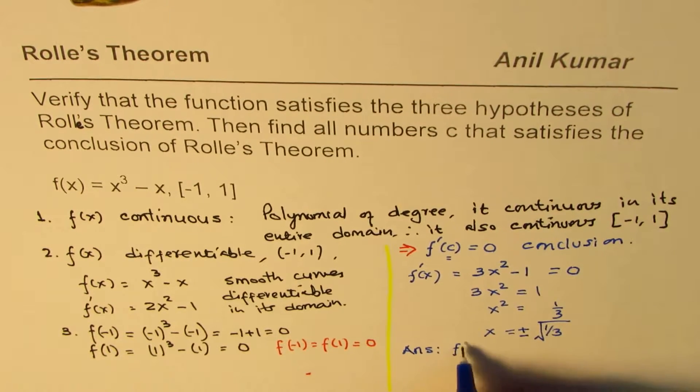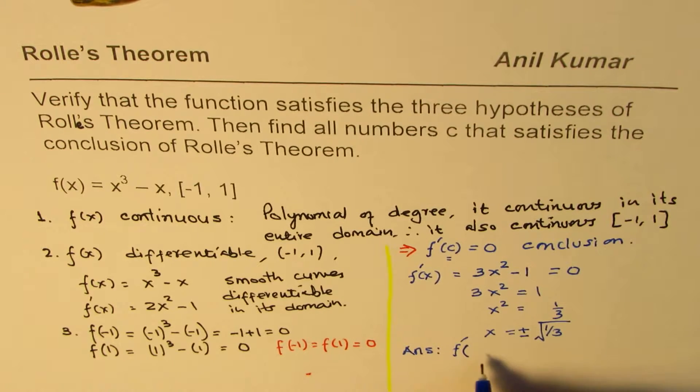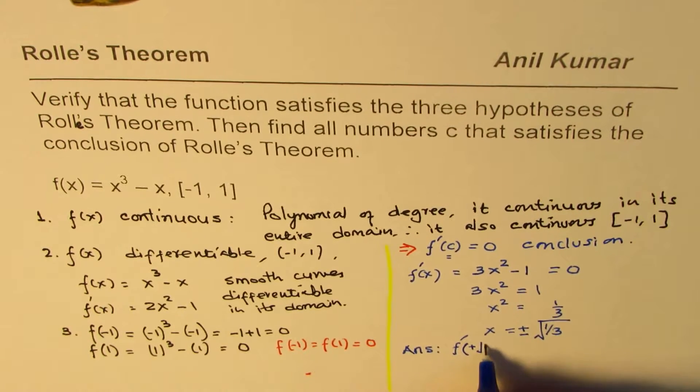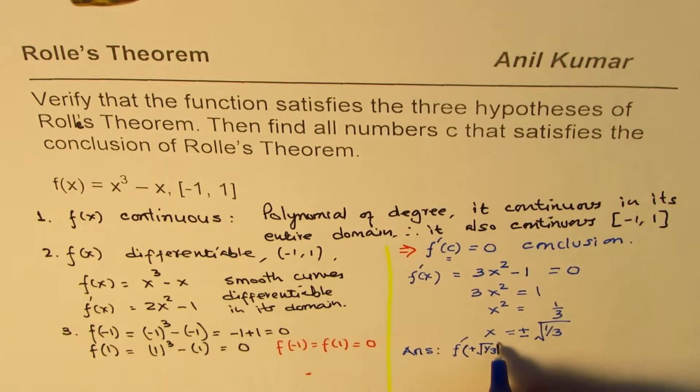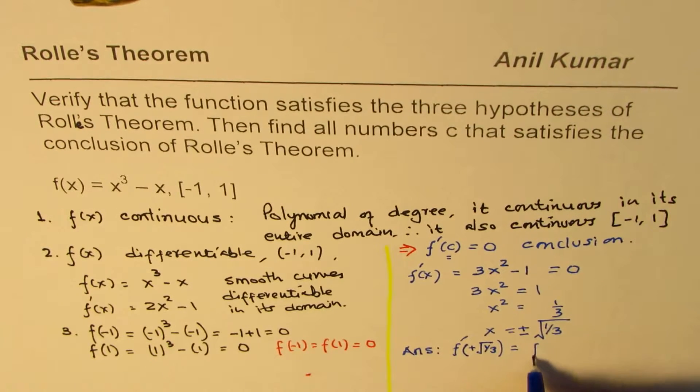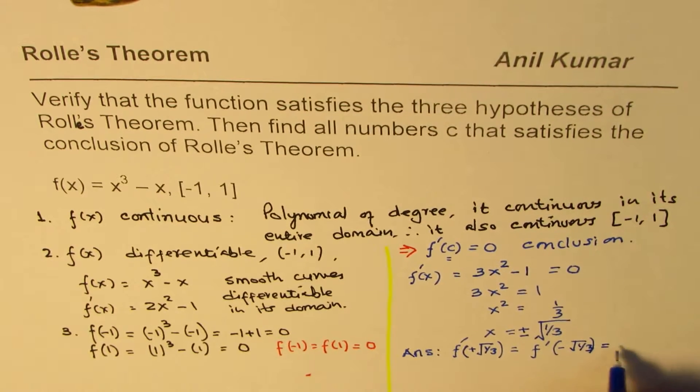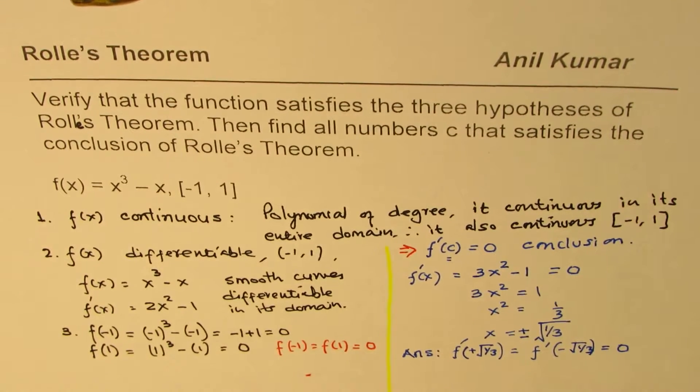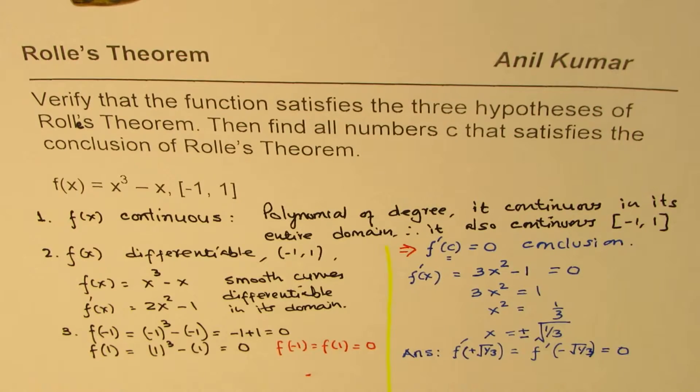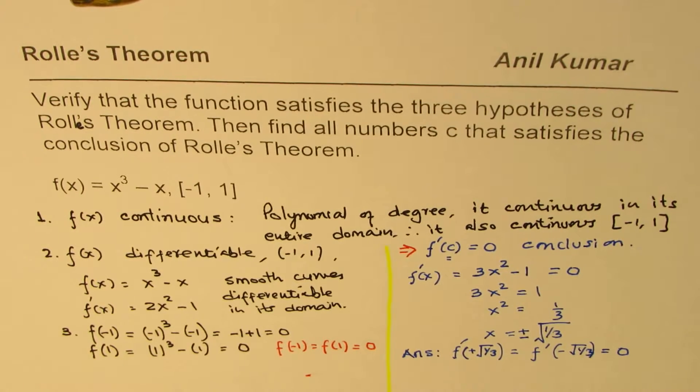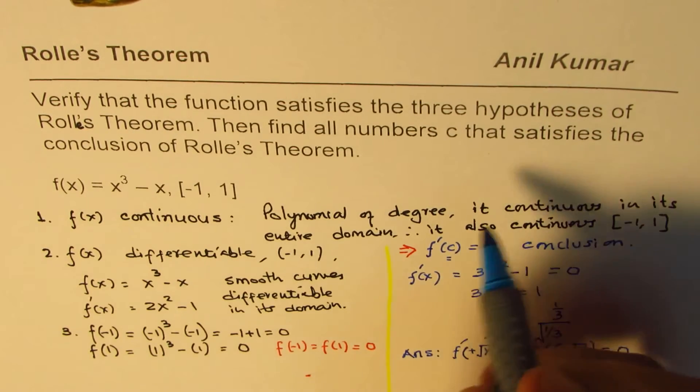So the c values are - so we have our answer here and that is to say that f'(+√(1/3)) = f'(-√(1/3)) = 0. So c is ±√(1/3). So let me also sketch this function here and show you what we're trying to prove.